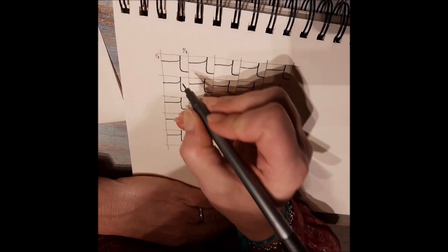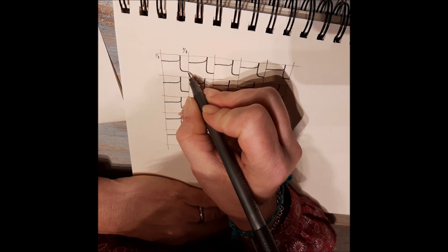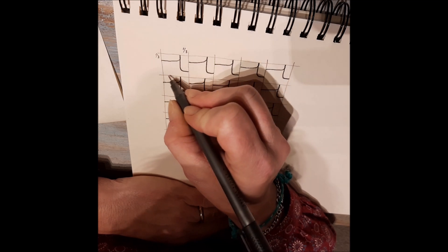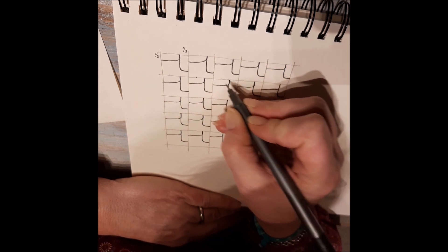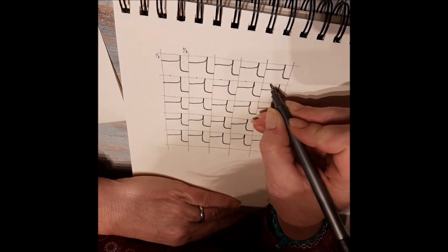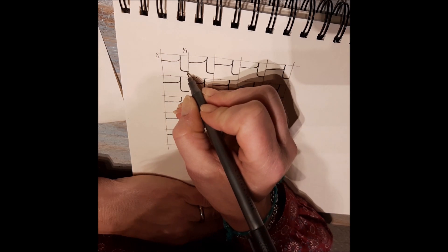And the next one, the same. We start at one-third and we end one-third. So here it might help you if you mark a little dot where you want to end your curved line.